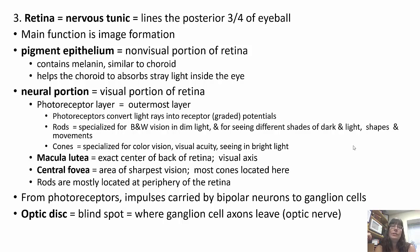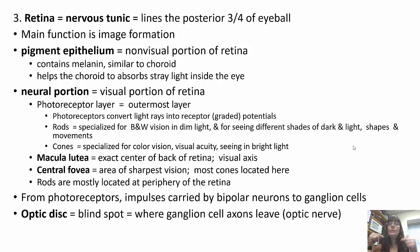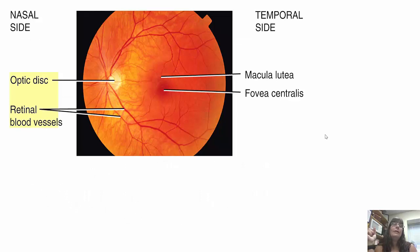There are two types of photoreceptors: rods and cones. Cones are specialized for color vision, visual acuity, and seeing in bright light. Rods are specialized for black and white vision, especially in dim light, and for seeing different shades, shapes, and movements. The macula lutea is the exact center of the back of the retina — the visual axis. The central fovea is the area of sharpest vision, where we have the most cones. Rods are mostly on the periphery; cones are toward the center. Impulses travel from photoreceptors via bipolar neurons to ganglion neurons. The optic disc is our blind spot — where ganglion cells exit, forming the optic nerve.